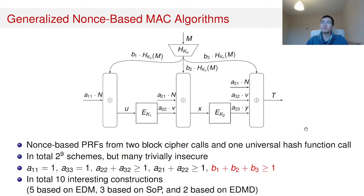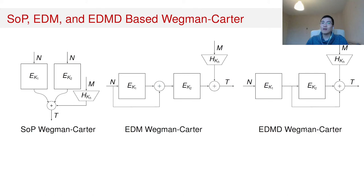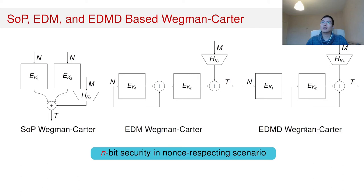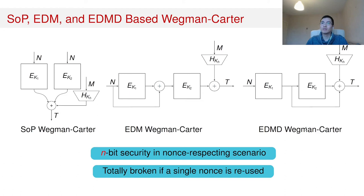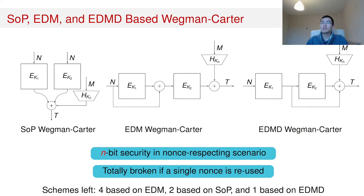After our analysis, there are in total 10 interesting constructions, where five are based on EDM, three are based on SOP, and two are based on EDMD. In this slide, I will show three of those 10 constructions: the special Wegman-Carter constructions based on SOP, EDM, and EDMD respectively. As mentioned before, Wegman-Carter constructions have n-bit security in the nonce-respecting setting but are totally broken in the case of a single nonce reuse. So what remains are seven constructions, where four are based on EDM, two are based on SOP, and the last one is based on EDMD.